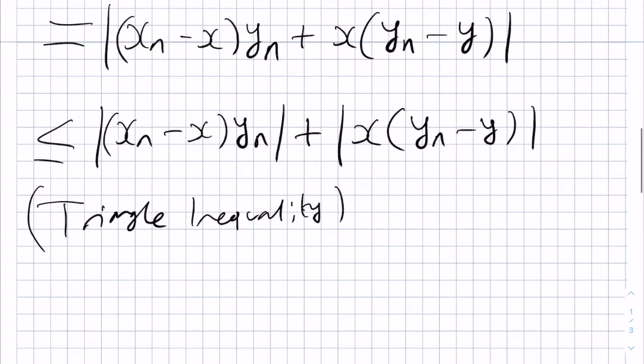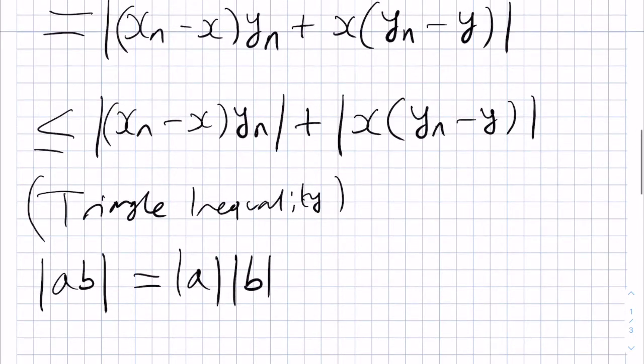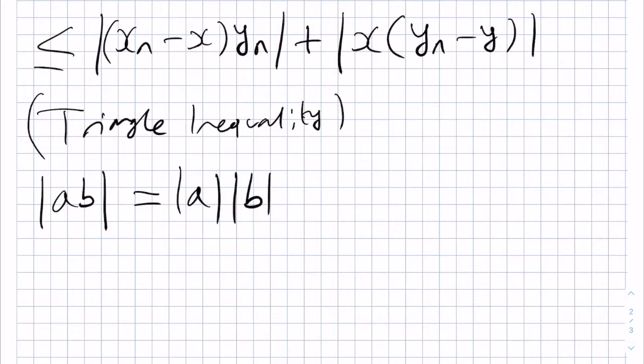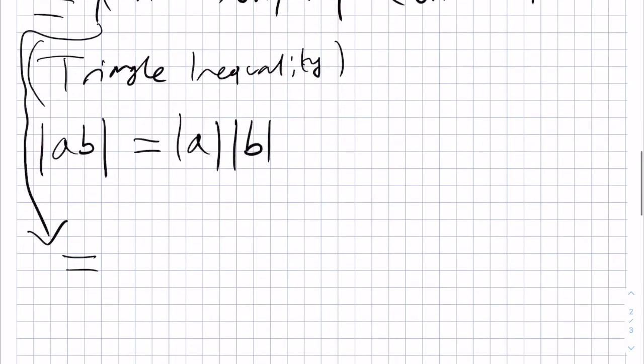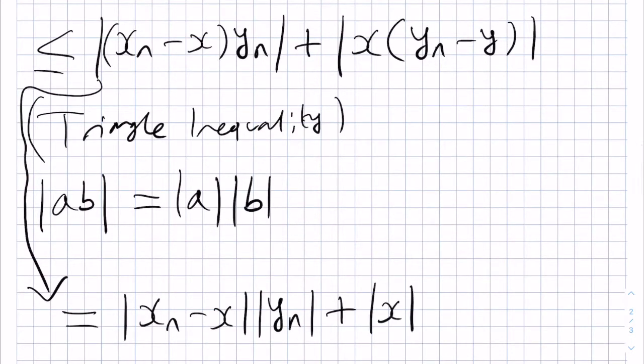Now, in general, the modulus of the product AB is equal to the product of the moduli, which is the modulus of A times the modulus of B. So, we can use this to separate factors in the above expression on the right-hand side of the inequality. We get that it's equal to the modulus of Xn minus X times by the modulus of Yn plus the modulus of X times by the modulus of Yn minus Y.